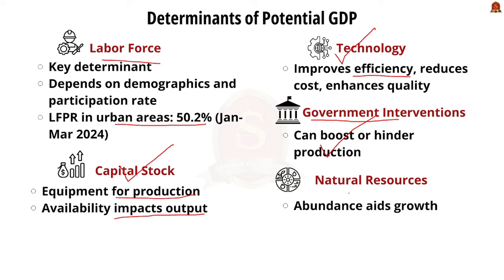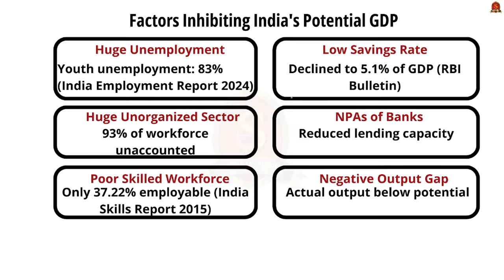The factors inhibiting India from achieving its potential GDP: First is huge unemployment. Though various employment generation schemes are operational, they are not sufficient to keep pace with growing job demands. The India Employment Report 2024, released by the International Labor Organization and the Institute of Human Development, says India's youth account for almost 83% of the unemployed. There is also an educated unemployment of 70% according to NITI. Next is the huge unorganized sector — workers in the unorganized sector constitute around 93% of the total workforce, according to the NITI report of India 75.